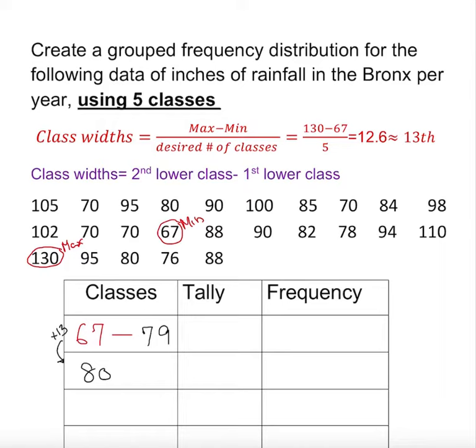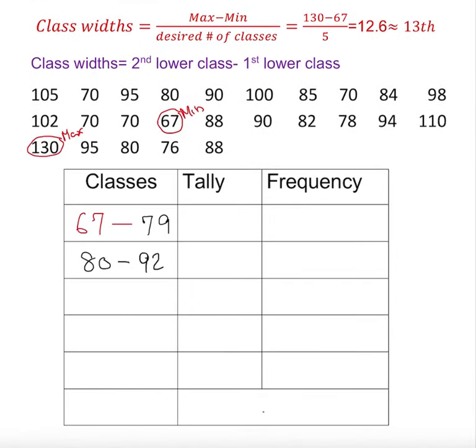Now if classes are given, every time you just add 13. You add 13, you're going to get this one. So 80 plus 13 is going to give you 92. If you know the class width, you just take the difference between these two: 80 minus 67 gives you 13, 92 minus 79 gives you 13.